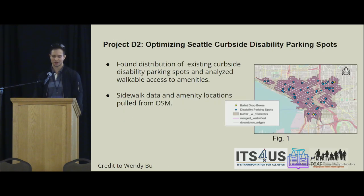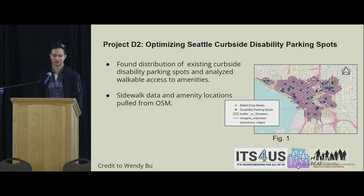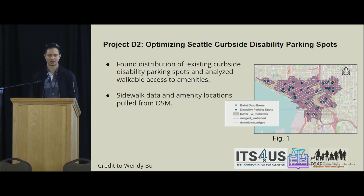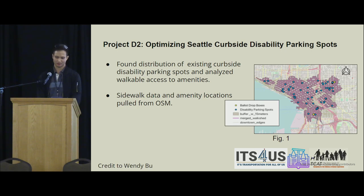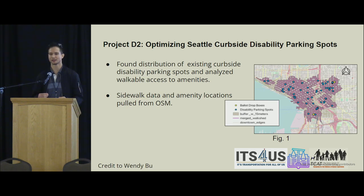The last project analyzed curbside disability parking spots and access to ballot locations. This information came from OpenStreetMap that students would not have had access to otherwise. The sidewalk data helped identify areas where the city can improve access for people with disabilities to reach ballot locations.